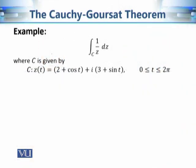Let's see how to apply the Cauchy-Goursat theorem to evaluate some contour integrals. Consider the function 1 over z. If we want to calculate this contour integral along contour c, which is given in parametric representation, let's see what is the geometry of this contour.